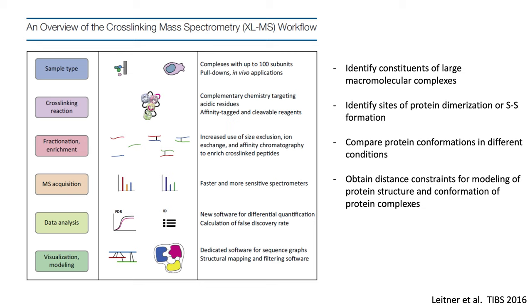Crosslinking mass spectrometry is an experimental workflow used to identify constituents of large macromolecular complexes. It can be used to identify sites of protein dimerization or disulfide formation, to compare protein conformations in different conditions, as well as to obtain distance constraints for modeling of protein structures and conformation of protein complexes. This methodology can be applicable to multiple different sample types, including complexes with up to 100 different subunits, and is applicable with pulldowns and in vivo applications both.